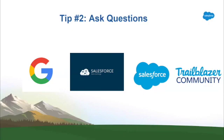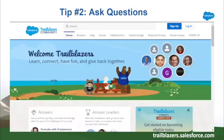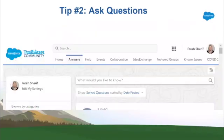Now, what if you can't find an answer to your question? Ask on the Trailblazer community. The Salesforce Ohana are always there for help — it's what makes the community strong. So don't be afraid to ask for help; it's never a stupid question. Just log in to your Trailhead account, go to trailblazers.salesforce.com, go to the answers tab, and type your question.